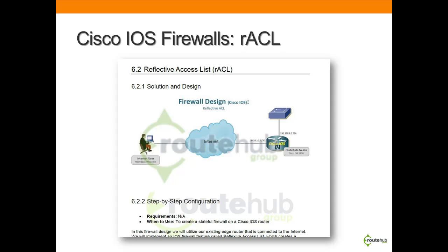As for Cisco IOS firewalls, we will show you two designs you can use that provide stateful firewall behavior like the Cisco ASA. The first one — my favorite of the two — is using reflective ACLs. We will show you the design, step-by-step configuration, and its full working configuration.